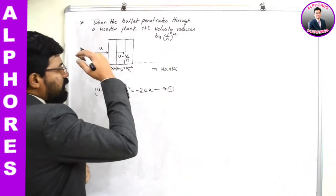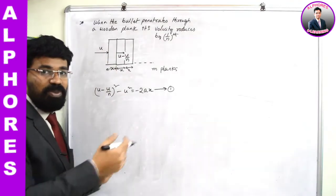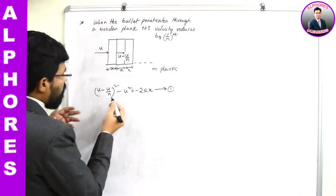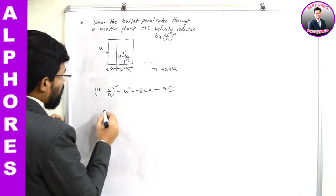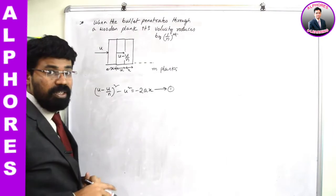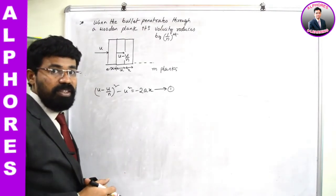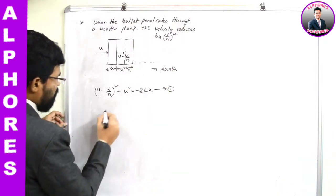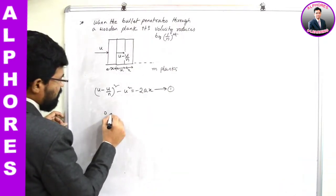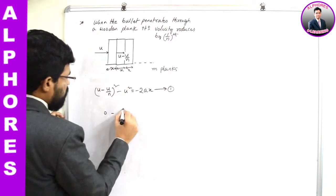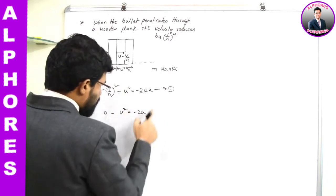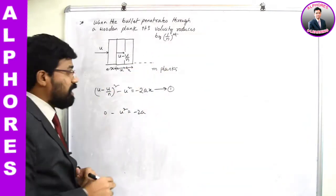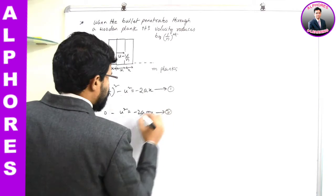When the bullet enters the mth plank, it comes to rest — final velocity is 0. Considering u as the initial velocity and 0 as the final velocity after traveling through all m planks: 0 - u² = -2a(mx). This is equation number 2.